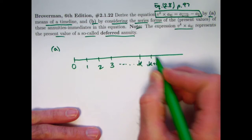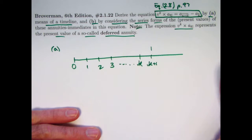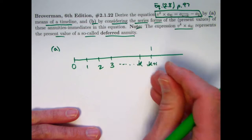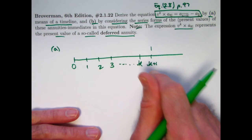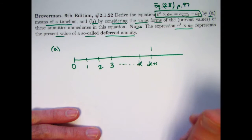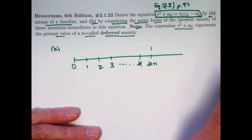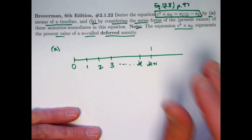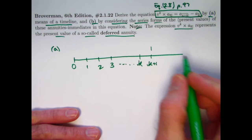We could also think of it as an annuity due if we wait K plus one years and find a present value at that moment. But I'm thinking of this in terms of these symbols, which represent annuities immediate. If they were annuity dues, they'd have double dots above them, and I'm avoiding that at the moment.